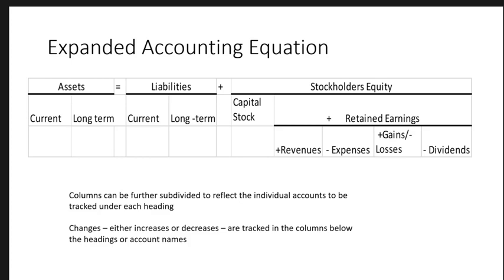We don't utilize this expanded equation except for illustration purposes because it gets very cumbersome. We're learning the process that is actually done in accounting software in real life, but you need to understand the picture of what's happening in that software. Changes to these assets, liabilities, and so forth are tracked in columns below the headings or account names. For example, we might break liabilities into accounts payable and other accounts, and if a transaction increases accounts payable, we'd record an increase in that column.